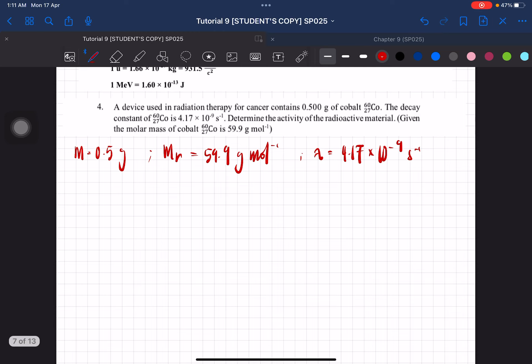We need to determine the activity of the radioactive material. Activity is equal to lambda N. We have the value of lambda. We just have to find the value of N, which is the number of molecules.